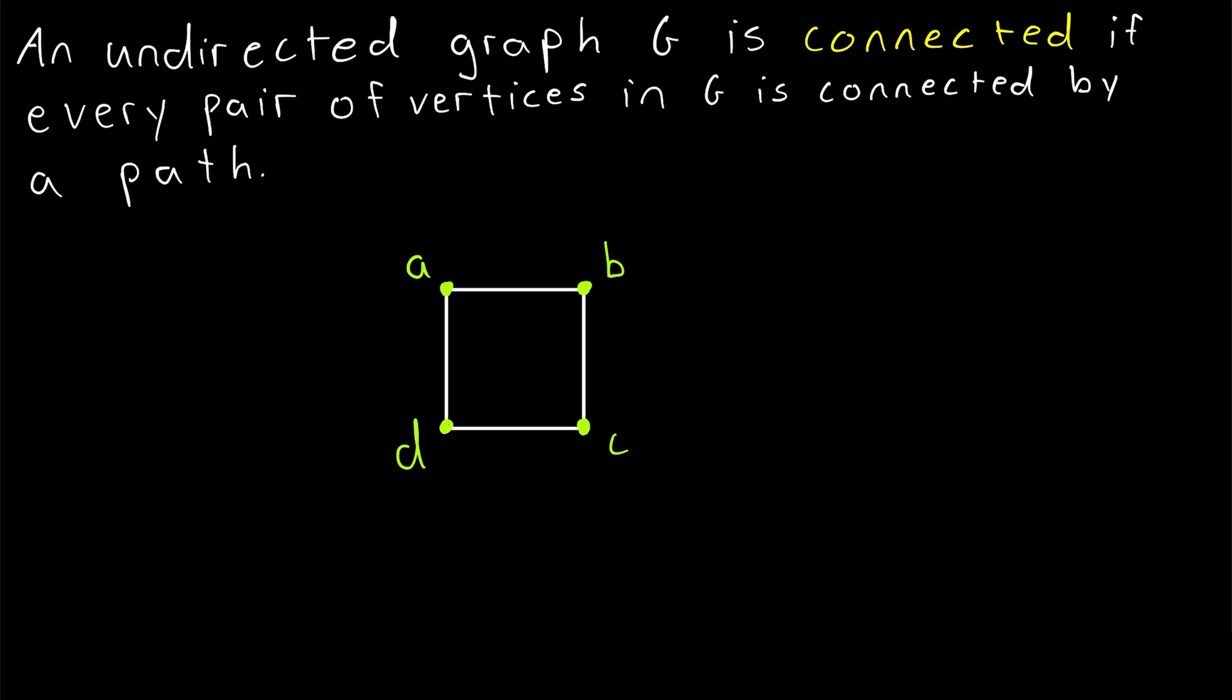Before we get to the definition of strongly connected, let's quickly recap some definitions of connectivity that we're all probably familiar with. We say an undirected graph G is connected if every pair of vertices in G is connected by a path.